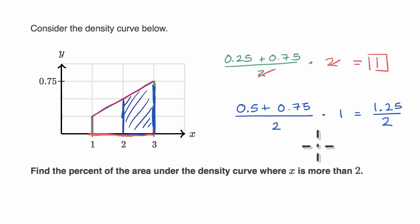Well, that would be 0.625. Did I do that right? Yep. If I multiply two times this, I would get 1.25. So the percent of the area under the density curve where x is more than two, this is the decimal expression of it. But if we wanted to write it as a percent, it would be 62.5 percent.